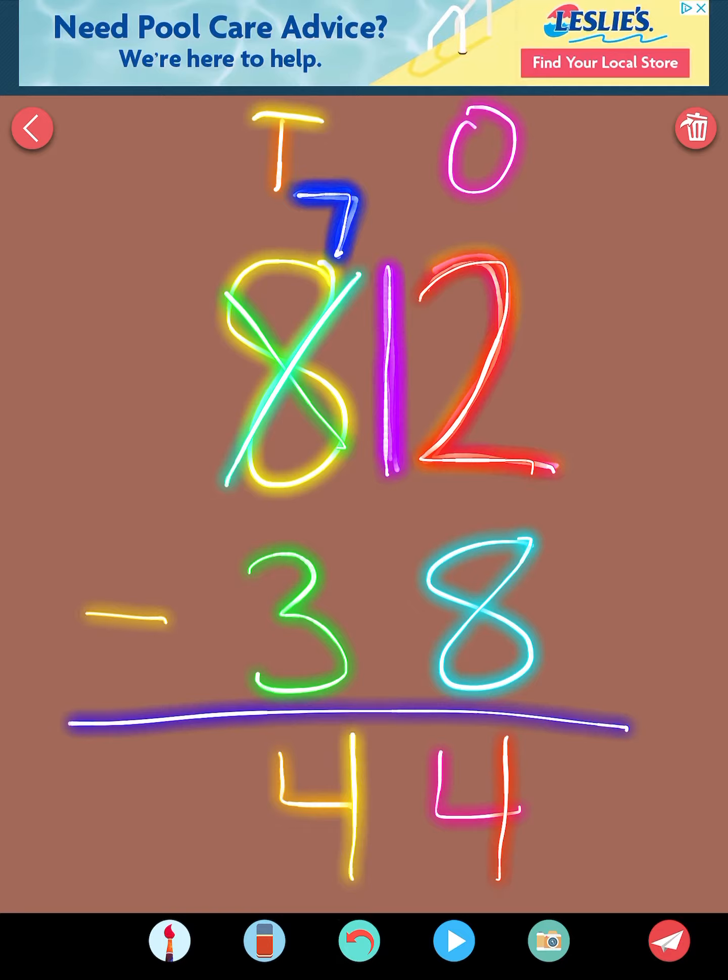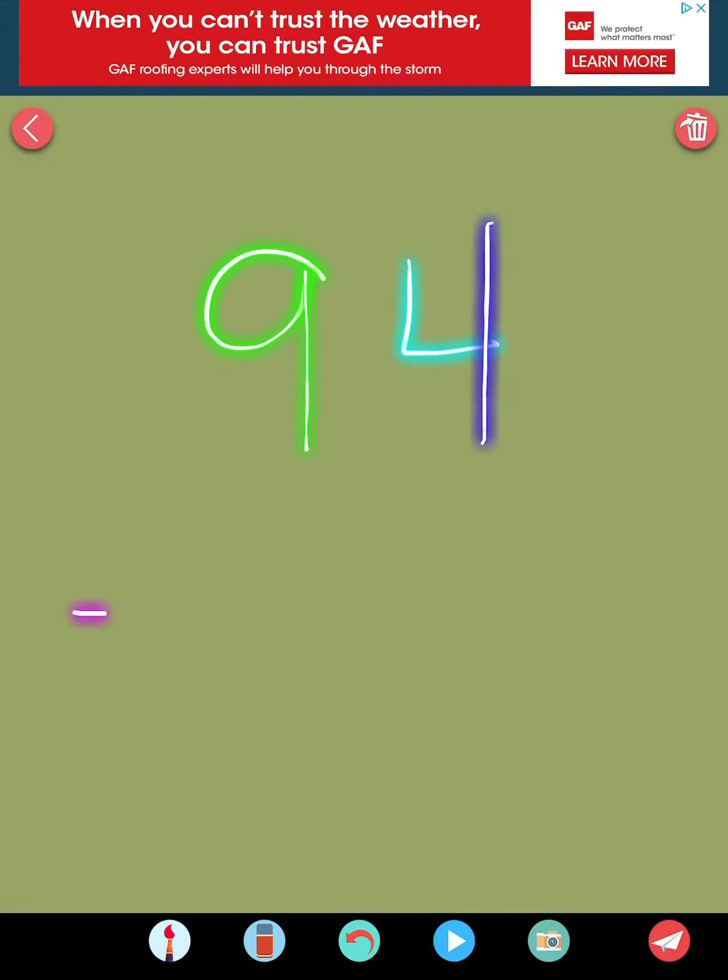Okay, that was a tricky one. Let's do one of those together. So get your pencil ready. I want you to write 94 minus 56. Okay, let's do it together.